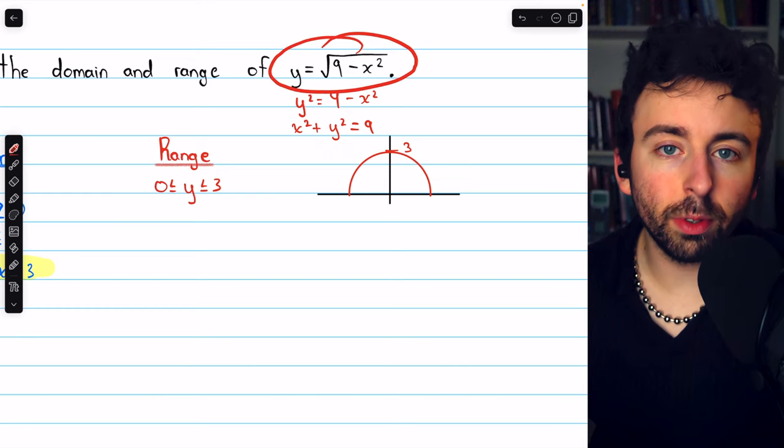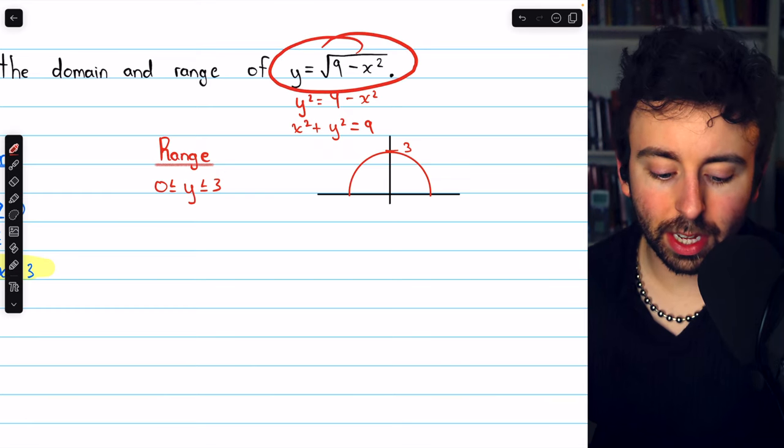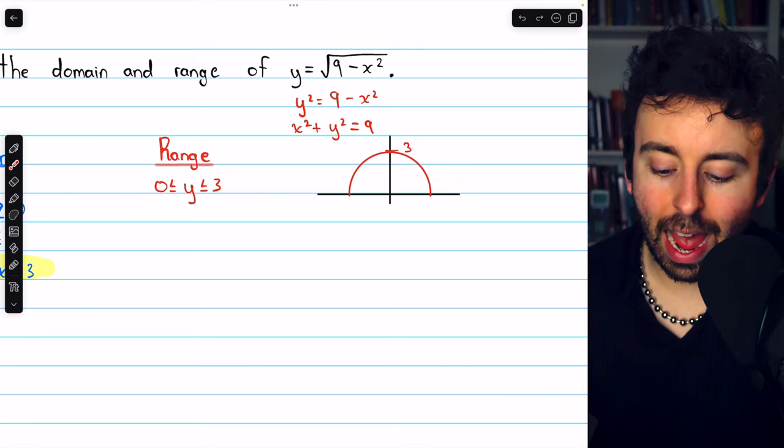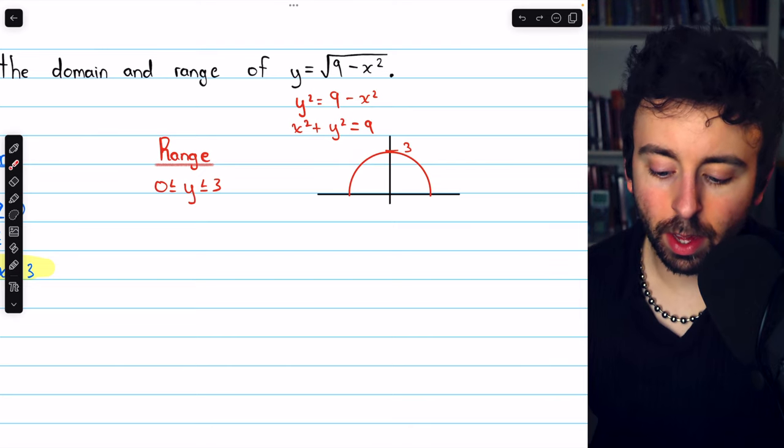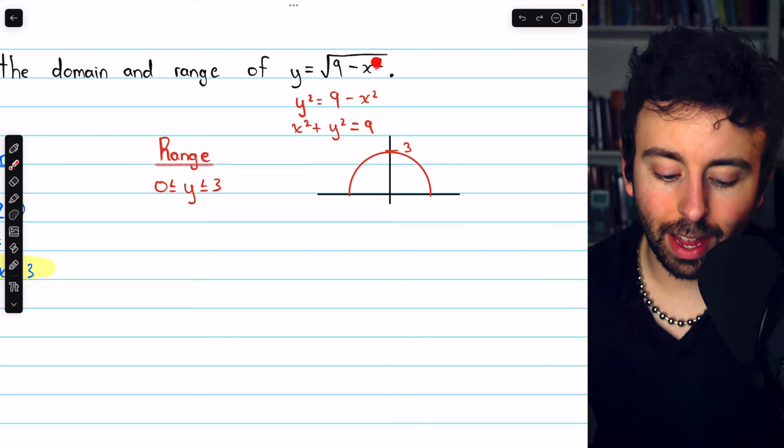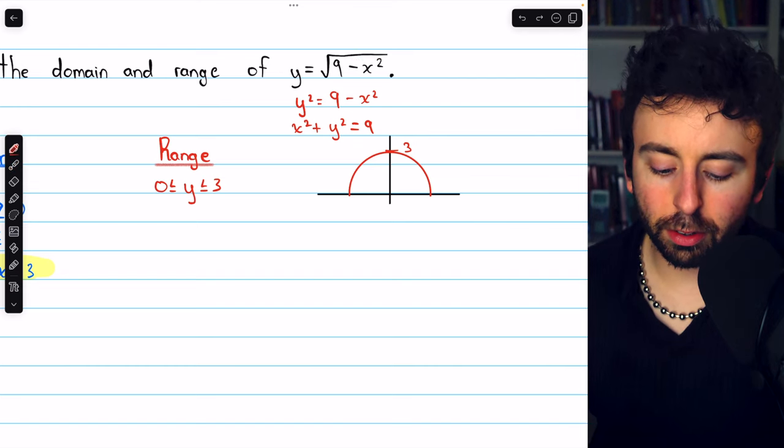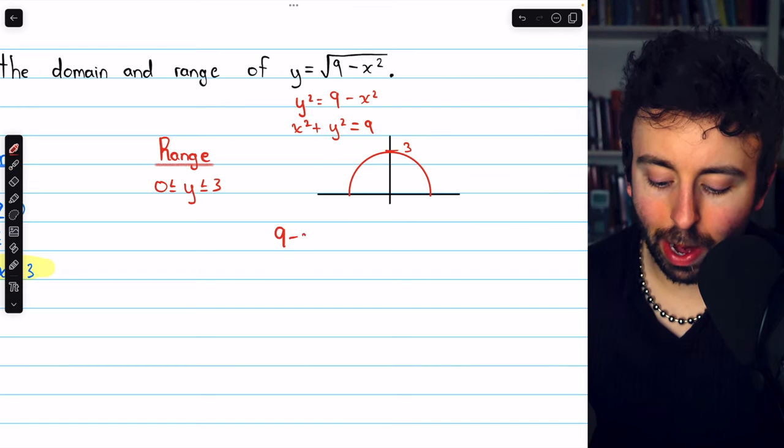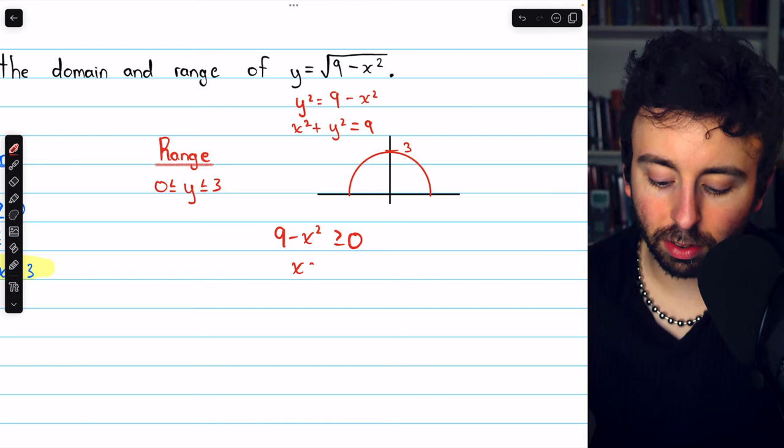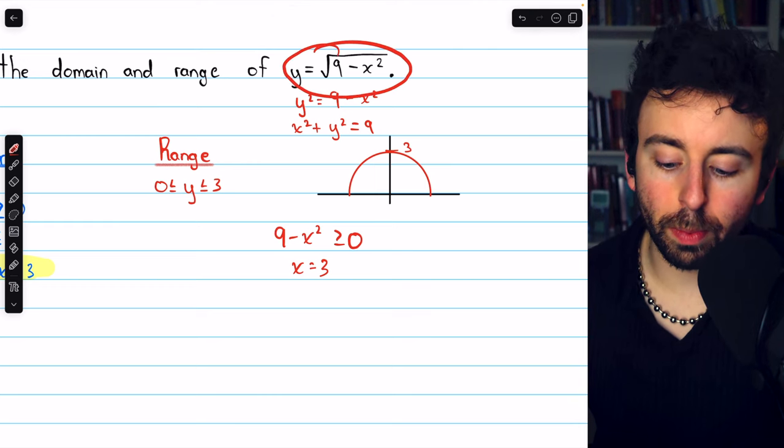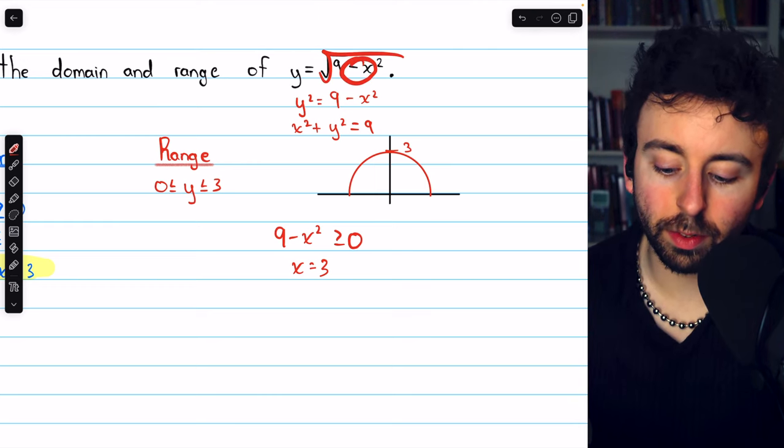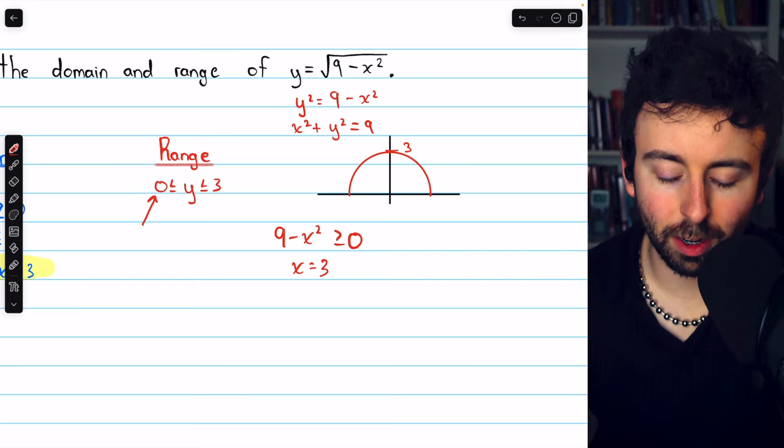Now, if you didn't know that this was the equation of a circle, you'd have to think a little bit harder. We'd have to ask, what's the smallest the inside of this square root can be? The smallest that 9 minus x squared can be? Well, the smallest 9 minus x squared can be is 0. When x equals 3, it takes on a value of 0. So the smallest that the function could be is the square root of 0, which of course is 0.